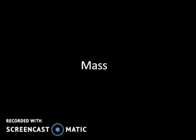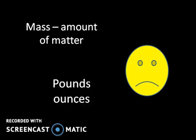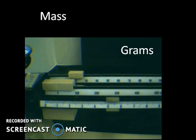And finally, something called mass. Know that mass and weight are different. Mass is the amount of matter an object possesses, and I don't want you to get mass confused with measurements of pounds and ounces. We measure mass in terms of grams, milligrams, or kilograms. In science, when we take that measurement, we'll be using something called a triple beam balance to measure in grams.